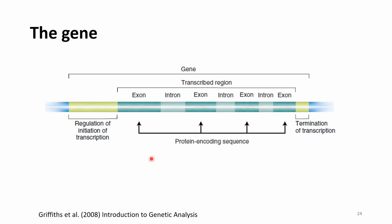Inside genes, there are parts called exons — the protein-coding regions — and introns that are between exons. This is how a gene generally looks. It could have a very different number of exons and introns, and the lengths can differ for each gene. It starts with the regulatory region, then a certain number of exons and introns, followed by a termination region that ends transcription.